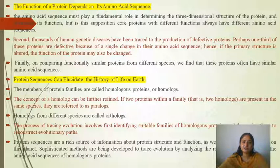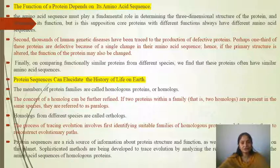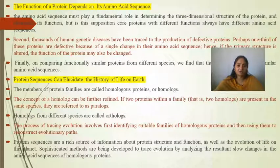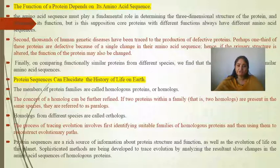Protein sequences can elucidate the history of life on Earth. Members of protein families are called homologous proteins. This concept can be further refined: if two proteins are within the same family, we call them paralogous proteins. If proteins are from different species performing similar functions, we call them orthologous proteins. Tracing evolution involves identifying suitable families of homologous proteins and using them to reconstruct evolutionary paths.